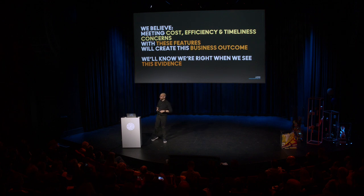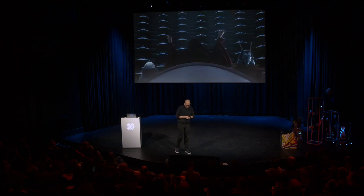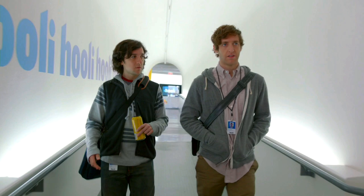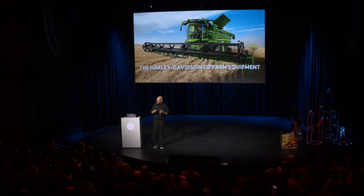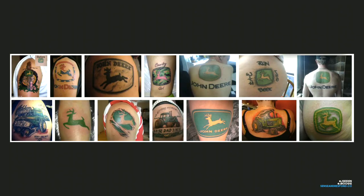Act 2: the business outcome — or, meanwhile at headquarters. The company we're talking about here is John Deere. John Deere has been around over a hundred years, and if you know anything about them, you know they are the Harley Davidson of farm equipment. People love their John Deere equipment. They say 'we're a deer farm' or 'we're a deer operation.' People really, really love John Deere.